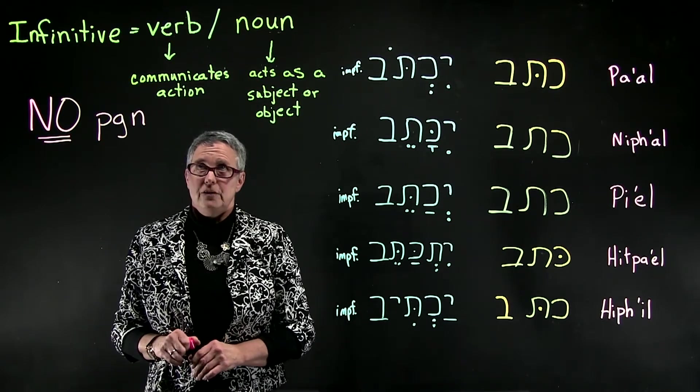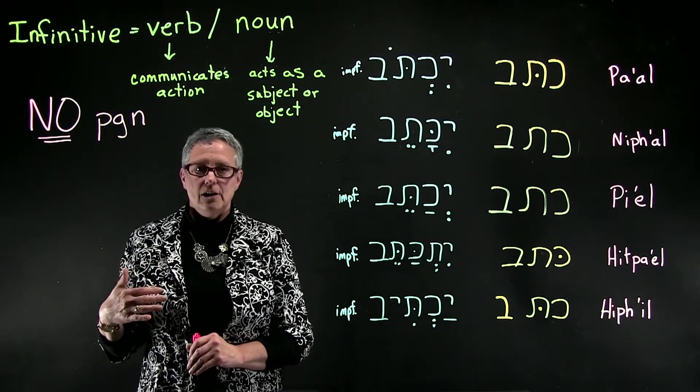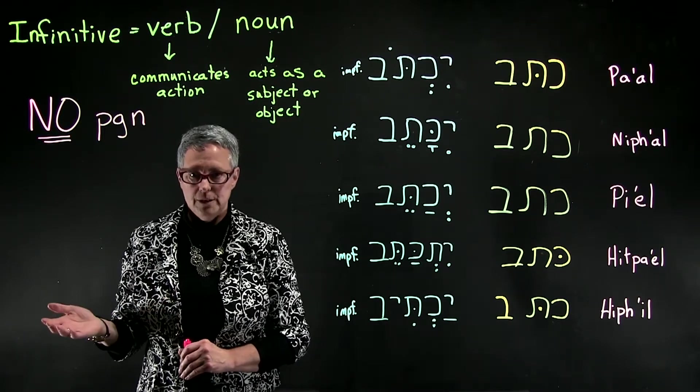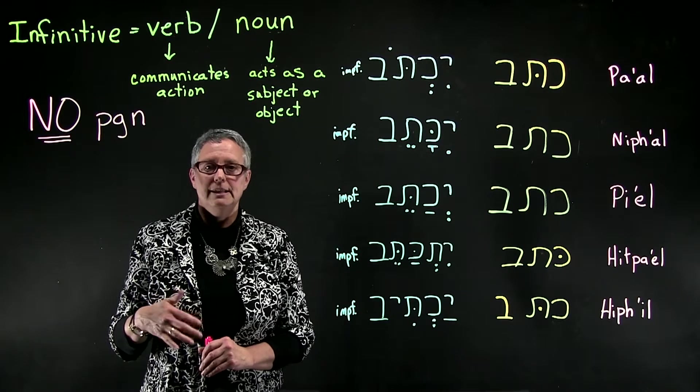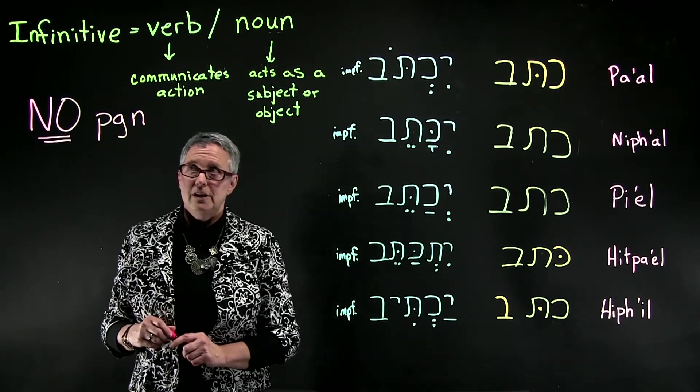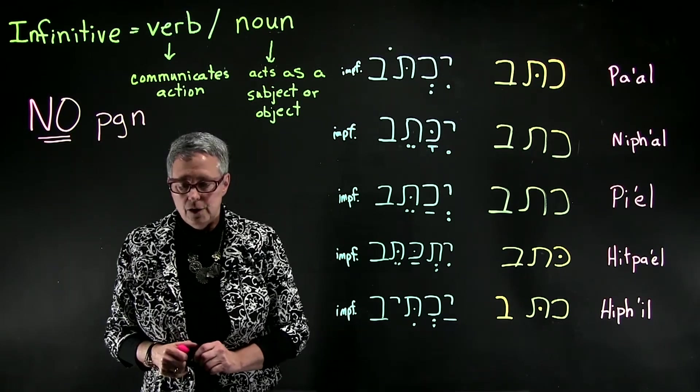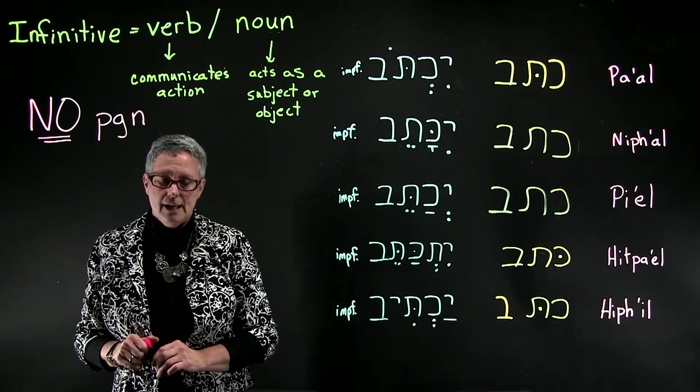The form of the infinitive is that it has a three-letter root, like all verbs. It has a binyan, a stem, like all verbs. Something significant about the infinitive, however, is that it has no PGN. There are actually two different kinds of infinitives.